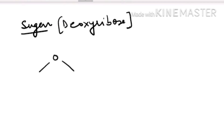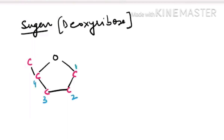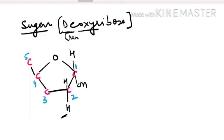See the diagram. The carbons are numbered: first carbon, second carbon, third carbon, fourth carbon, and fifth carbon. There is an OH group, and from the second position we are removing oxygen. Ribose sugar would have oxygen here, but in DNA the sugar is deoxyribose — 'de' means removal and 'oxy' means oxygen. So we have removed oxygen from ribose sugar, hence we call it deoxyribose.